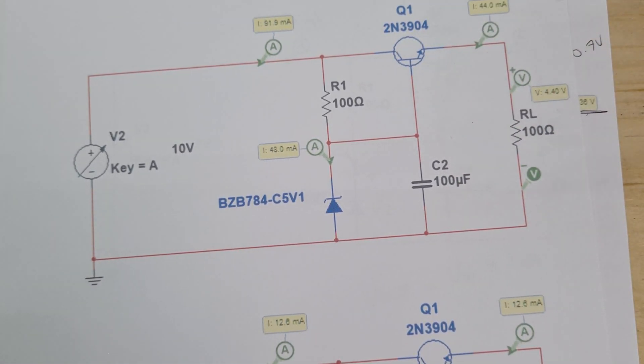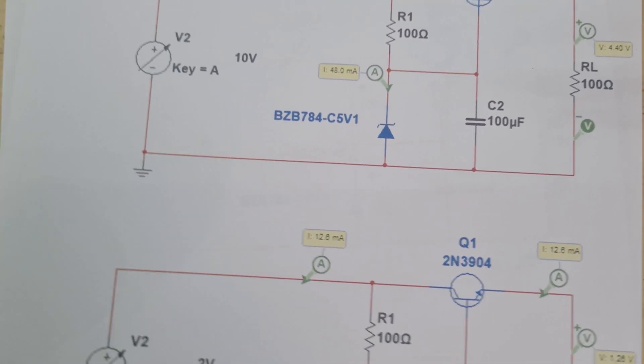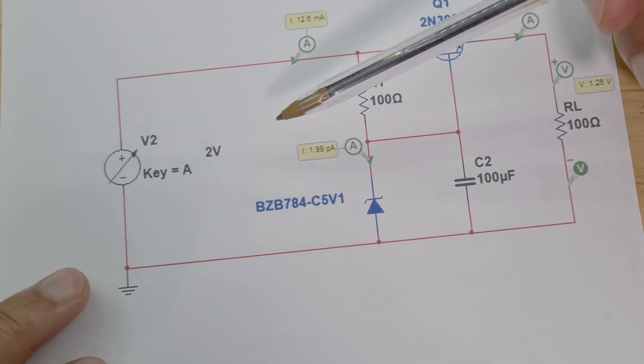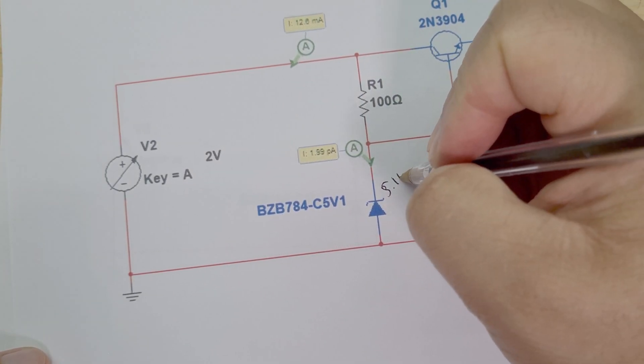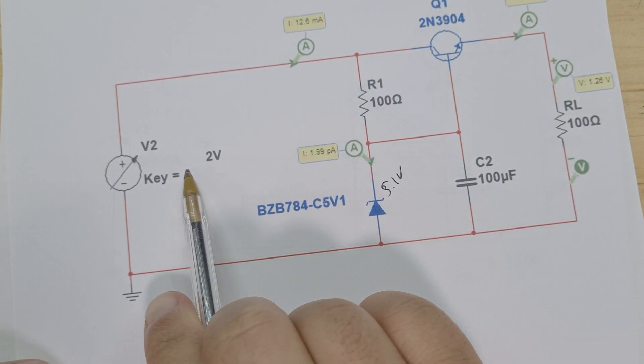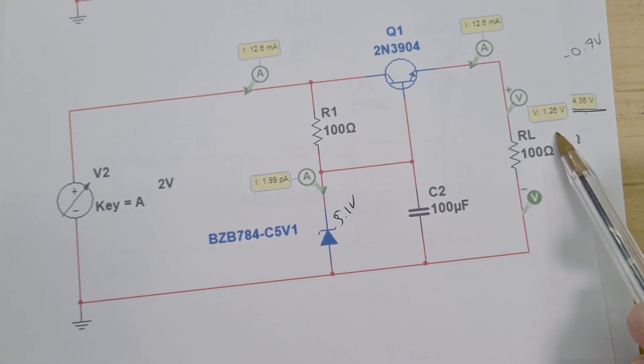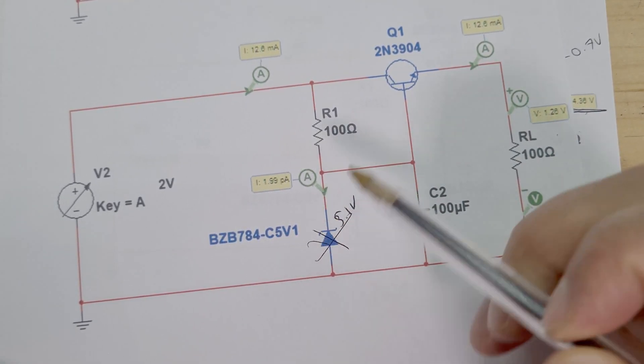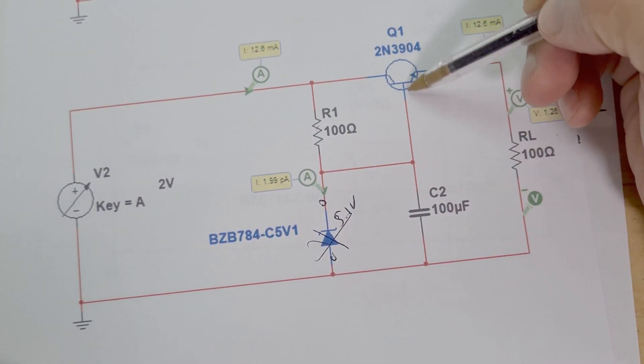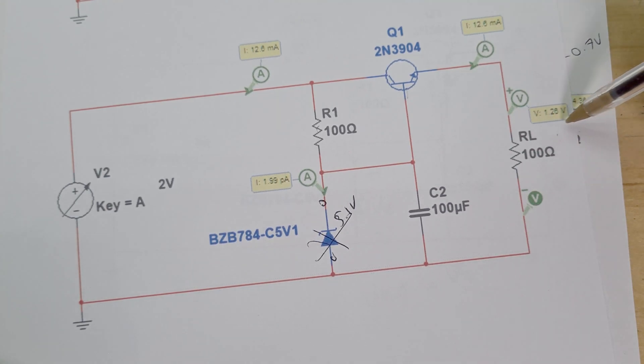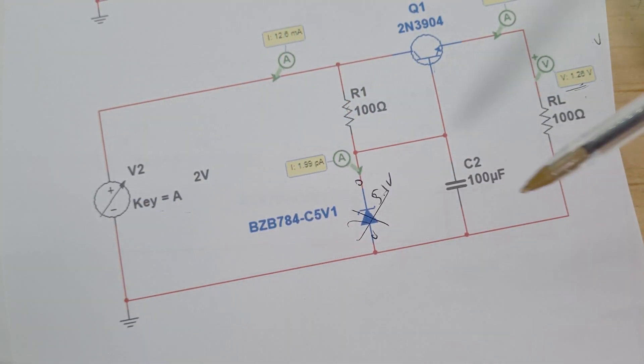And then if you look over here when you go obviously below the 5.1 volt Zener diode—so here's 5.1 volts—if you only had two volts at the supply then obviously you're only going to get a very low voltage because now the Zener diode basically just isn't working. You've got an open circuit there and then you just have just like a basic voltage divider here. And so you're still going to get an output voltage but it's going to be relative to the supply voltage.